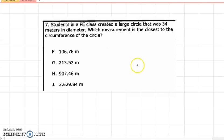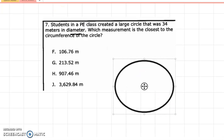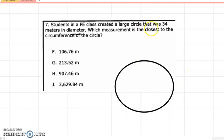Number 7 there. Students in a PE class created a large circle that was 34 meters in diameter. Which measurement is the closest to the circumference of the circle? Okay, so then we have a circle here. And so now I look at it and it has a diameter of 34. So that means that my line has to be, let's say this is the center, my line has to go all the way across and touch the center. So it must go from one end to the other side of the circle and cross the center. That's my diameter. So we're saying that's 34. So my diameter is 34.